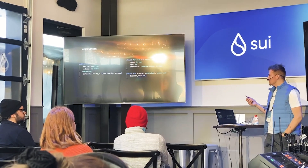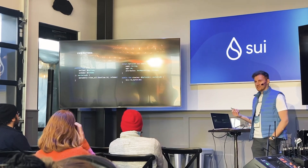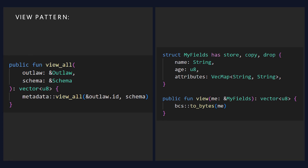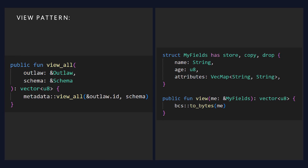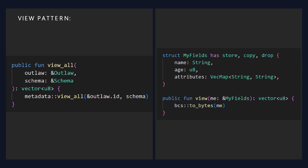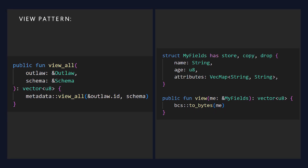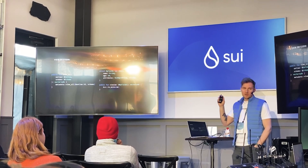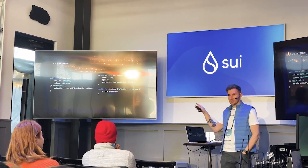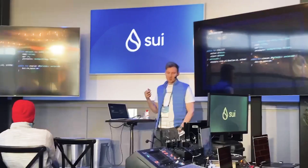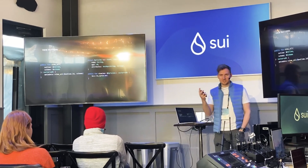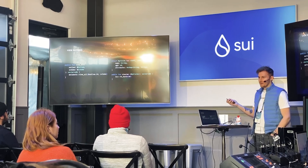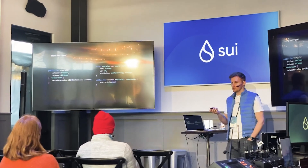Another game changer is the view pattern. They're called dev inspect transactions officially, but I call them view functions. In this case, you can pass in an outlaw, pass in a schema object, and we return bytes which allow you to understand what that object is. You can build your own custom view functions — for example, if you had a coin object and wanted to return different images depending on the balance inside the coin, you could create custom logic to do that. You get to decide how your objects will be presented to front-end clients.